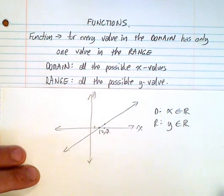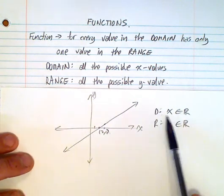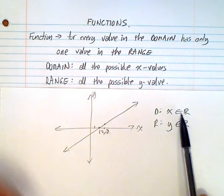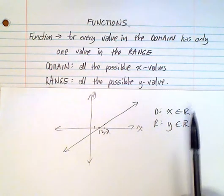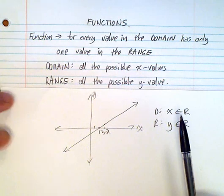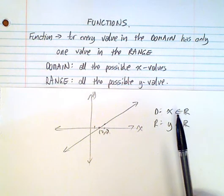normally we have x is an element of all real numbers, the range y is an element of all real numbers. This is called set notation. What this basically means is that x is any real number, which means any number, basically.